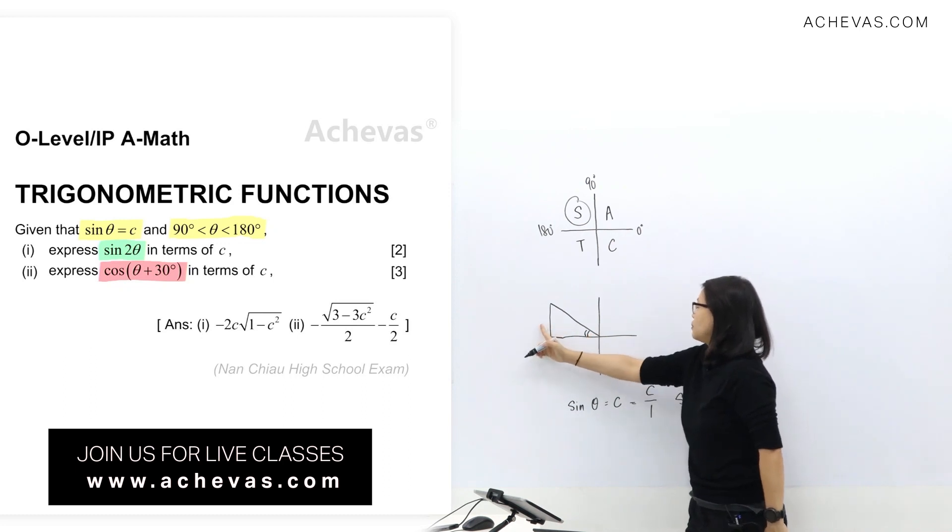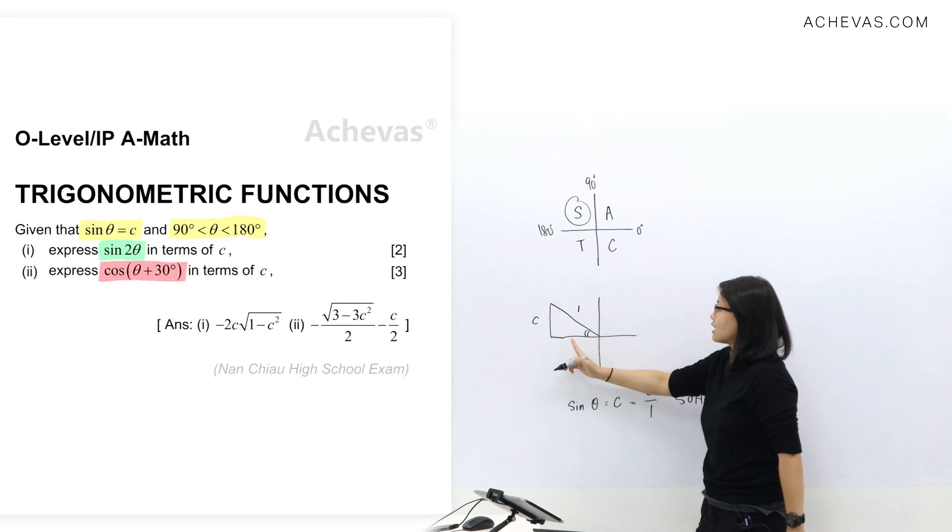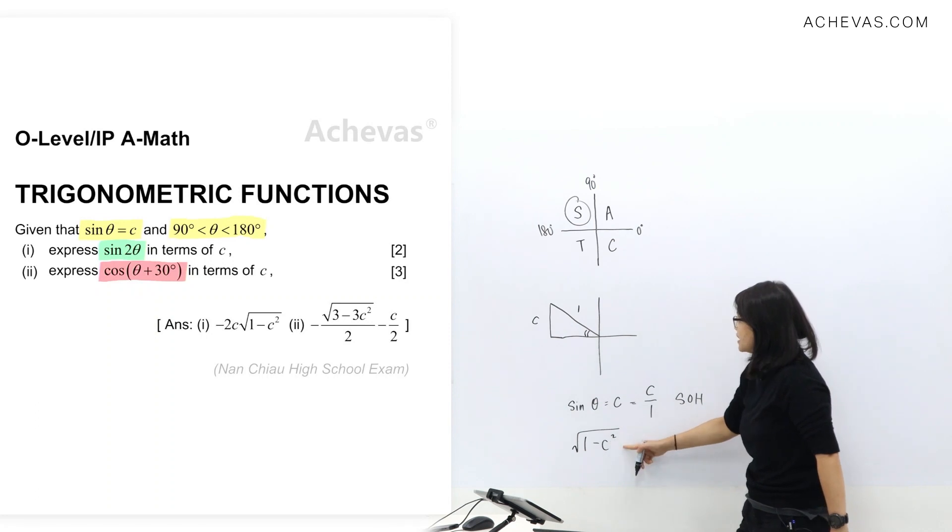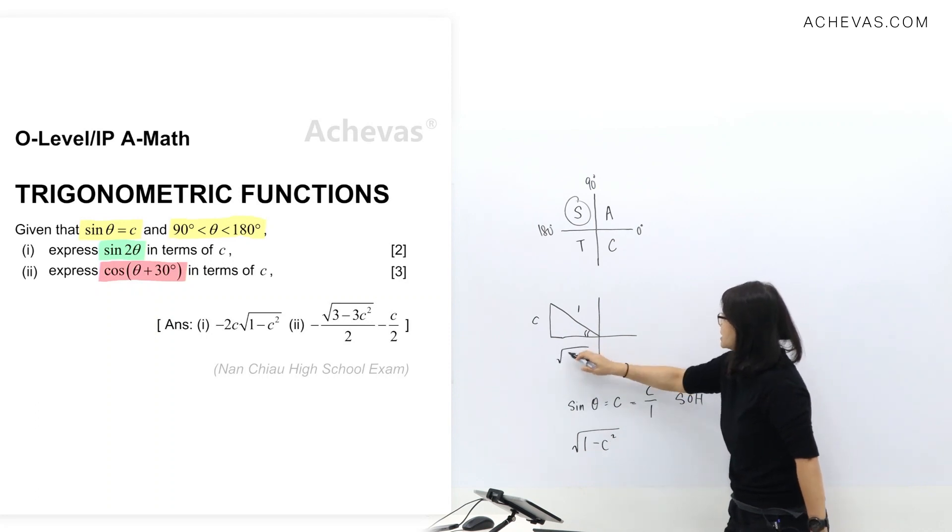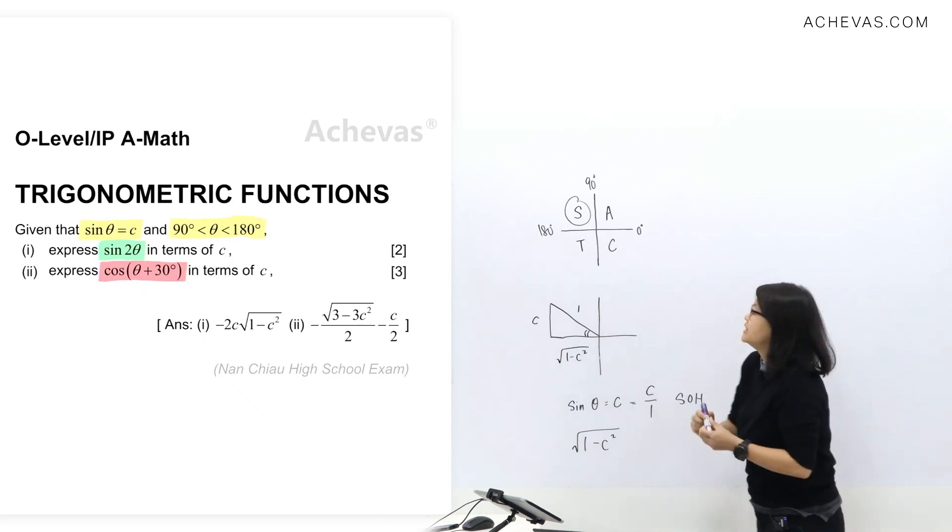So I'm going to look at this one here, opposite, I'm going to place it as c, hypotenuse as 1. So I can calculate this side using Pythagoras. So I have square root of 1 squared minus c squared here, and I'm going to place it in this diagram.